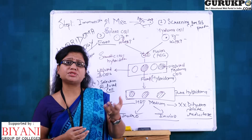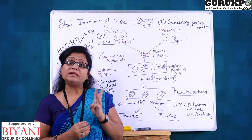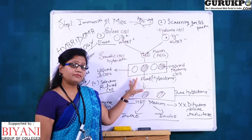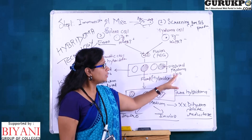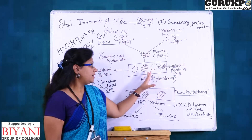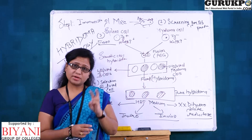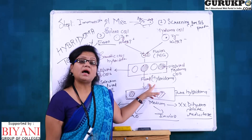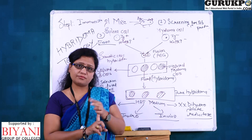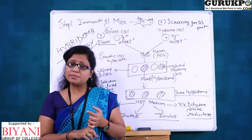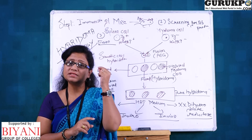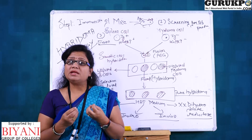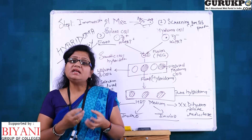After fusion, you test the animal cell culture and get three types of cells: unfused B cells, unfused myeloma cells, and fused hybridoma cells. From these three types, you have to select only the hybridoma cells. The B cell contributes antibody production against its specific antigen, and the myeloma cell contributes the immortal part — indefinite cell growth.